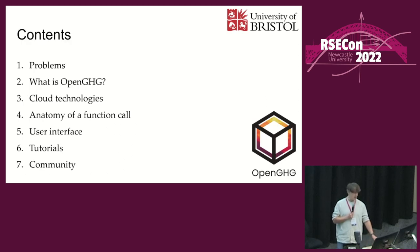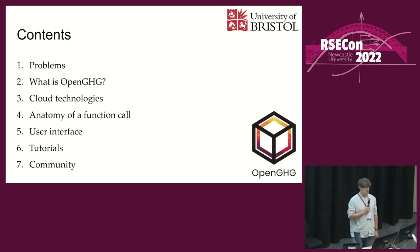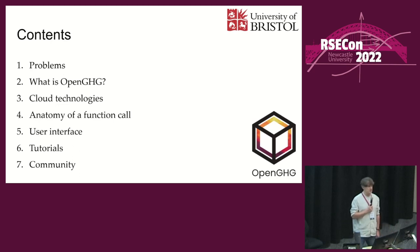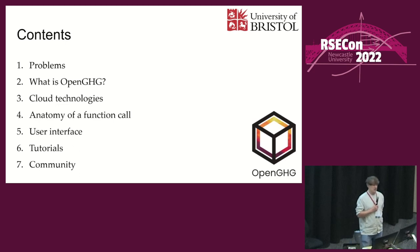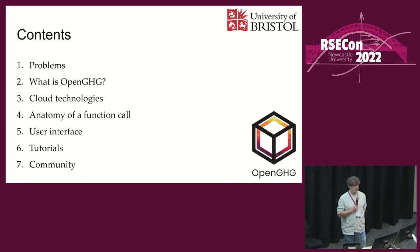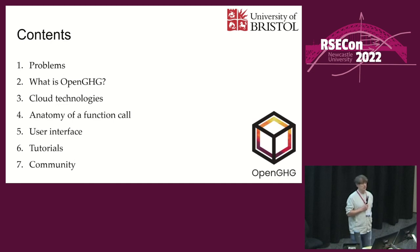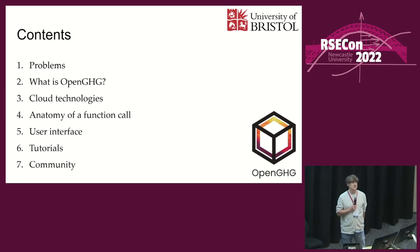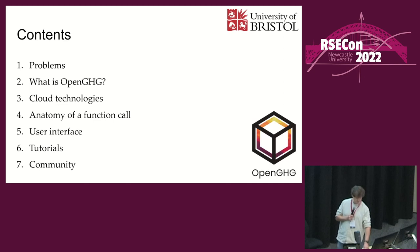So I'll just go over the content - content pages aren't quite as common anymore but anyway. So: problems we encounter in atmospheric chemistry research, talking about what OpenGHG is, the cloud technology we've been using, covering how we use serverless functions and what we use them for, creating user interfaces for interacting with different functionality of OpenGHG, building tutorials, and hopefully building a community around the project - which is of course a work in progress.